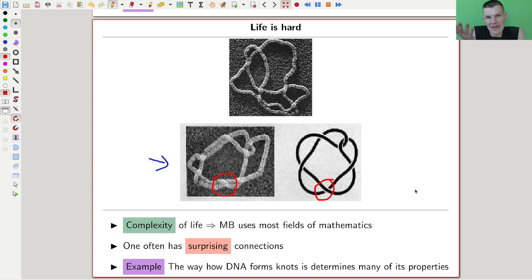Complexity of life implies that math biology actually really uses most fields of mathematics. It's really, really amazing, even the more pure ones like knot theory. It's really surprising, it's really beautiful. The property of DNA is mostly given by how it knots itself, how it arranges itself in space and ties into certain knots. So biologists use several tools like knot invariants to tell, oh this DNA is not this, or this DNA is not this.